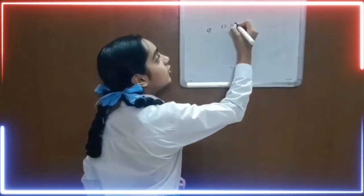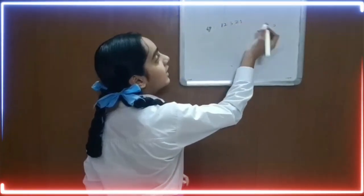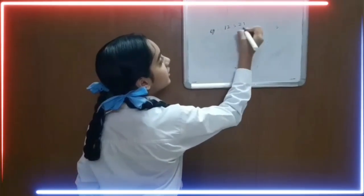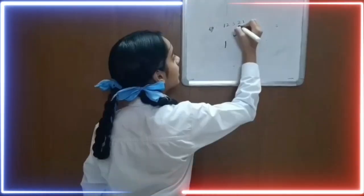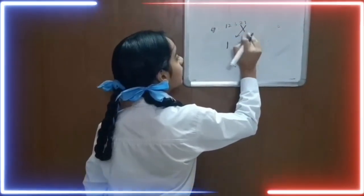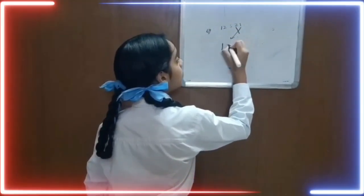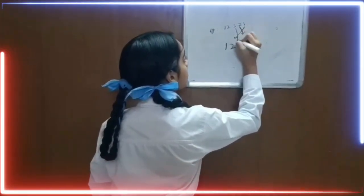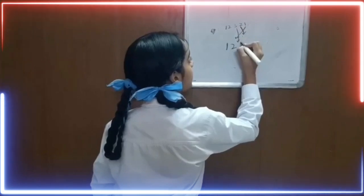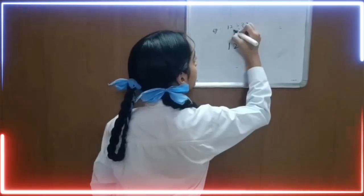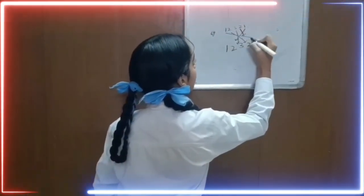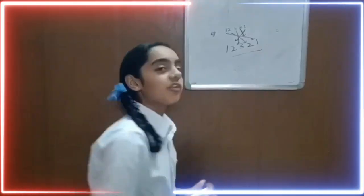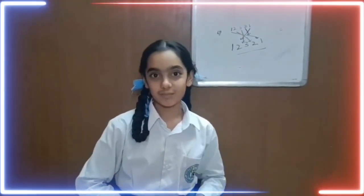One, two, three, two, one. So when I reverse it, it comes one, two, three, two, and one. It remains the same. It's a palindromic number.